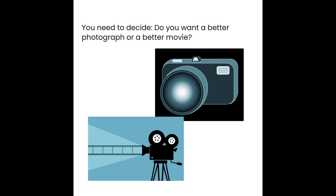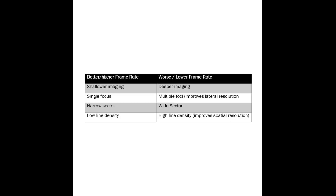Do you want a really good still picture or a better moving image? Higher frame rates are associated with shallow imaging, single focus, narrow sector, and low line density. Lower frame rates are associated with deep imaging, multi-foci, wider sectors, and high line density. Remember that multi-focus improves lateral resolution by making the beam narrower over a longer portion of the image, and high line density improves spatial resolution by providing more scanlines for more detailed anatomical information.